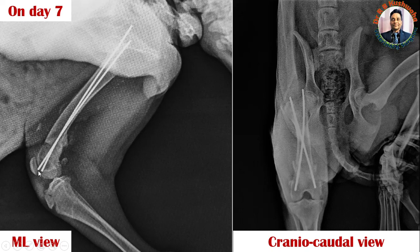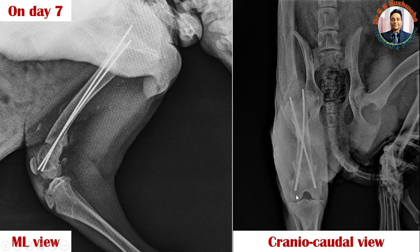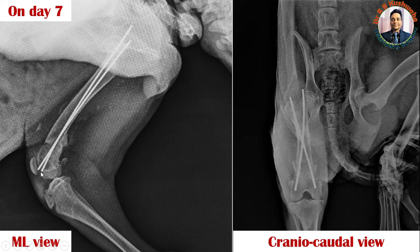From this mediolateral view it appears that the end of this K-wire is touching the patella or emerging from the articular surface, but that is not the case — the radiograph is a two-dimensional view of a three-dimensional object. If you see the same in the craniocaudal view, you can appreciate that the end of the pin is within the condyles, and even if it crosses to that level it will not affect the gliding of the patella over the trochlea, because the patella glides over the trochlea. So never be confused if the pin end appears to touch the patella or cross the articular surface.